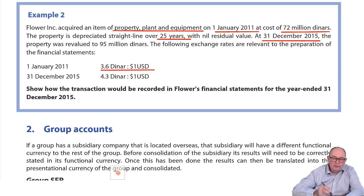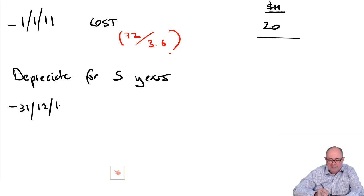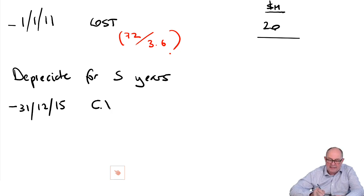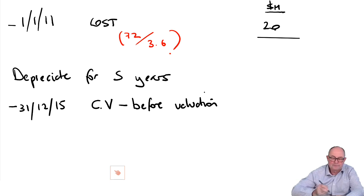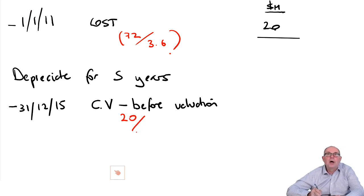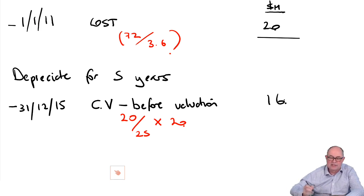So in dollars, just before the revaluation on the 31st of December 2015, the carrying value just before the valuation takes place would have been 20 over 25 times 20. So 20 over 25 times 20 is 16 million dollars.